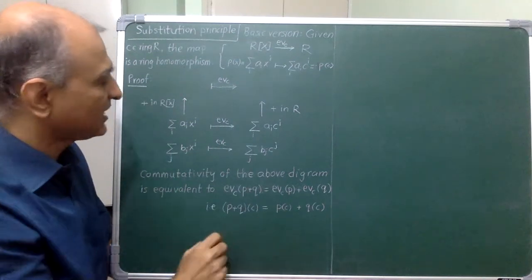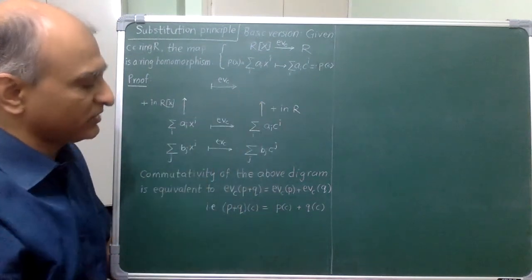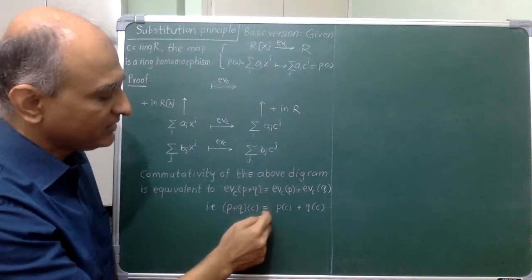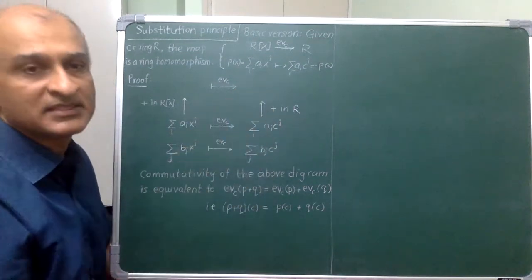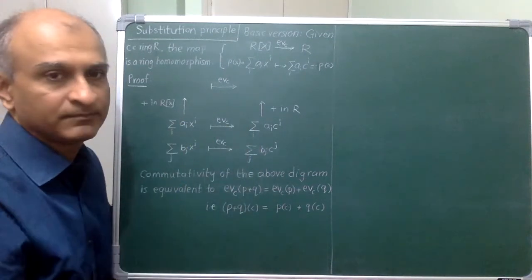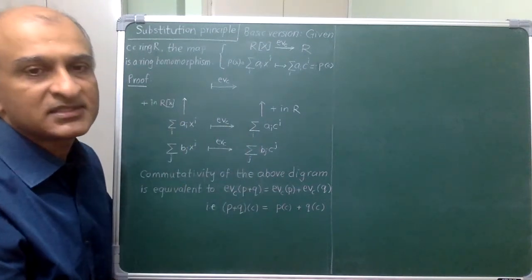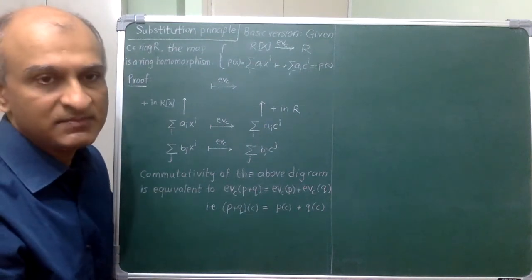On the right hand side, I am first evaluating both polynomials and then adding the results in the ground ring. The equality says that both ways of traveling gives me the same end result. In other words, this diagram is commutative. In mathematics, several facts can be expressed neatly in terms of such commutative diagrams and we will see several instances of those.